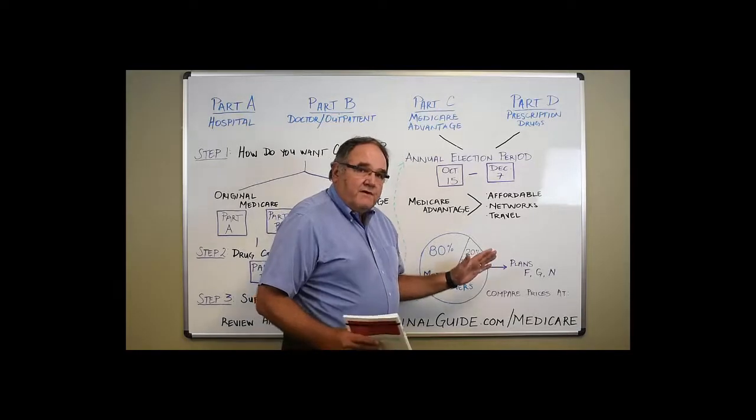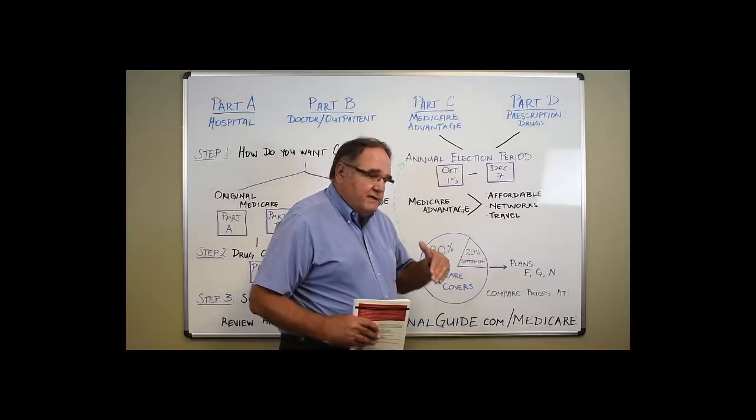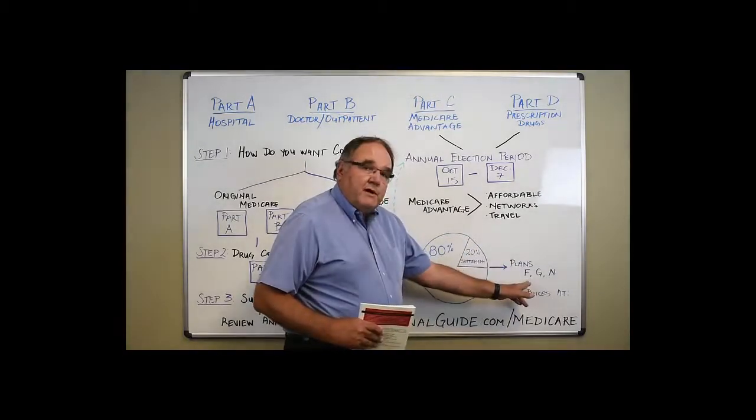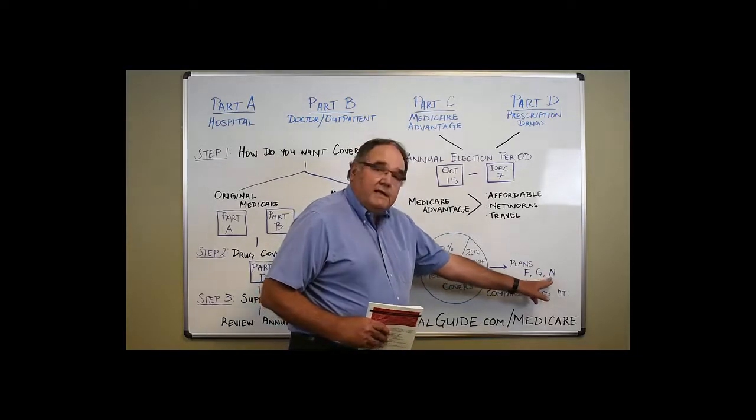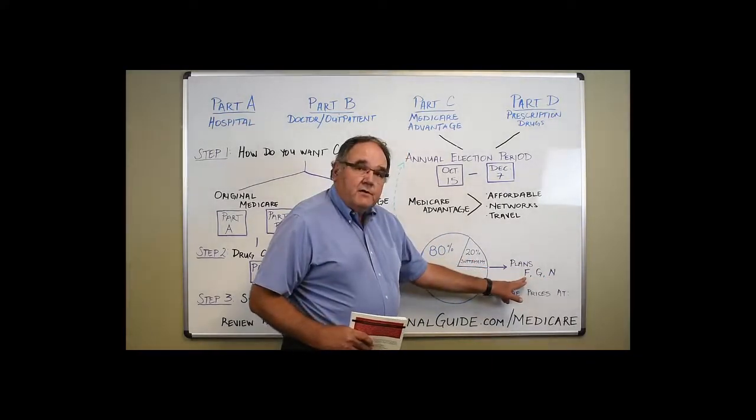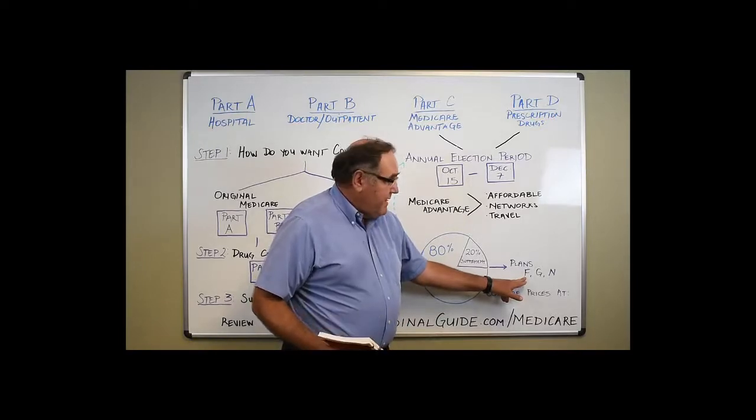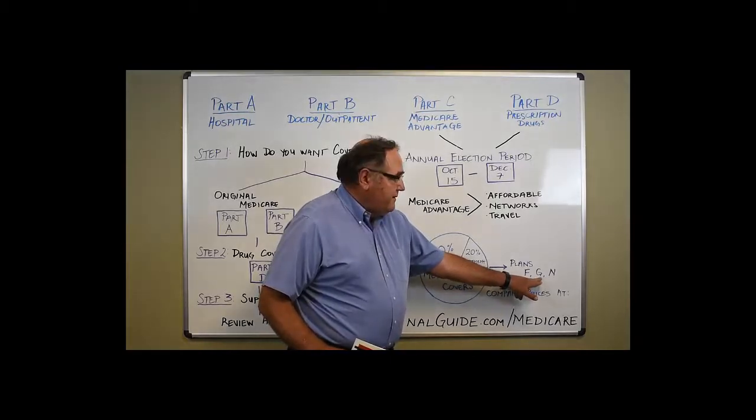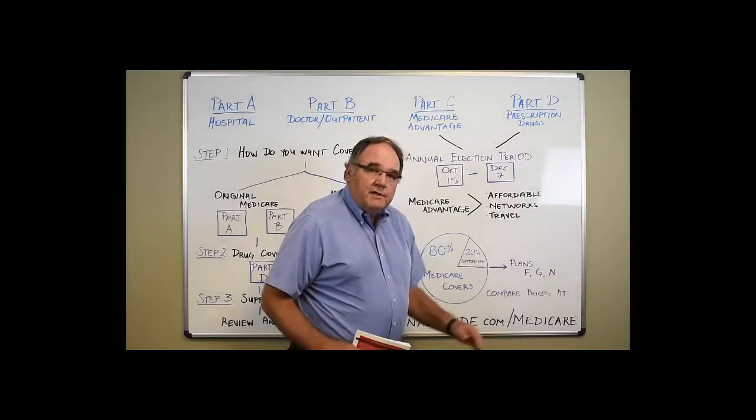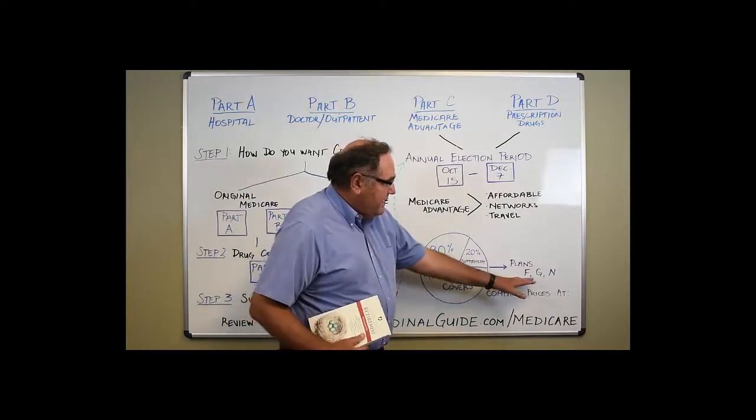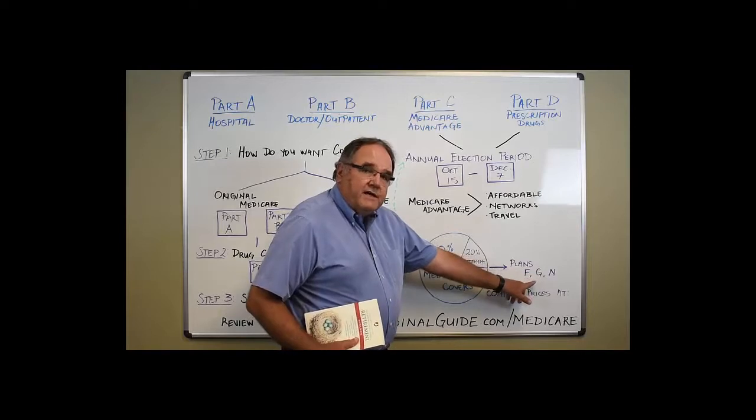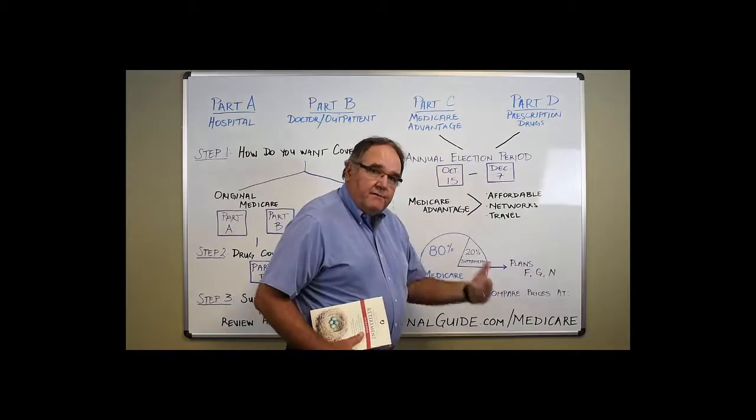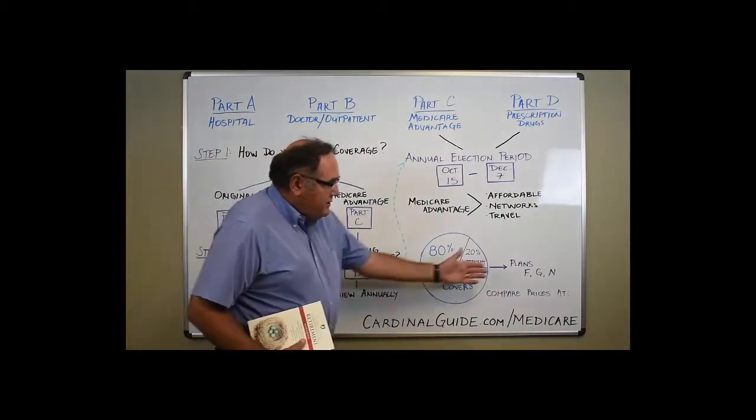Now, the supplements come where they're all the same from every company. So the government has dictated these are the particular benefits you can offer. We pretty much limit our choices to the F plan, the G plan, and the N plan. The F plan is going to be your most popular and it's going to have the most benefits. Your G plan is going to be the best value where you're going to get very high benefits for the best price. And your N plan is really going to be your price performer. You're going to cut back a little bit on benefits. It's important to note that this coverage is exactly the same. So it's very important that from year to year, or annually, that you check this stuff out.